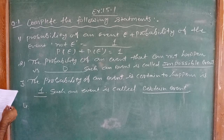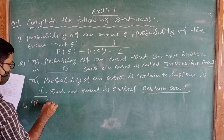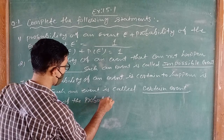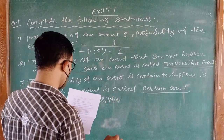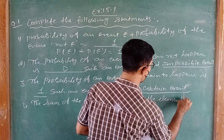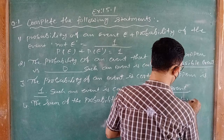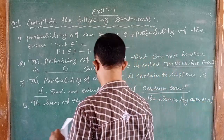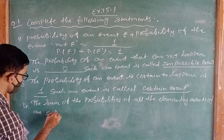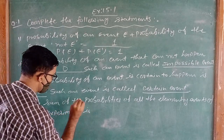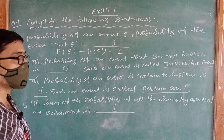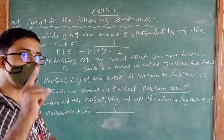Question number 4: The sum of the probabilities of all the elementary events of an experiment is 1. That means if we sum up the probabilities of all events, the total sum will be 1.